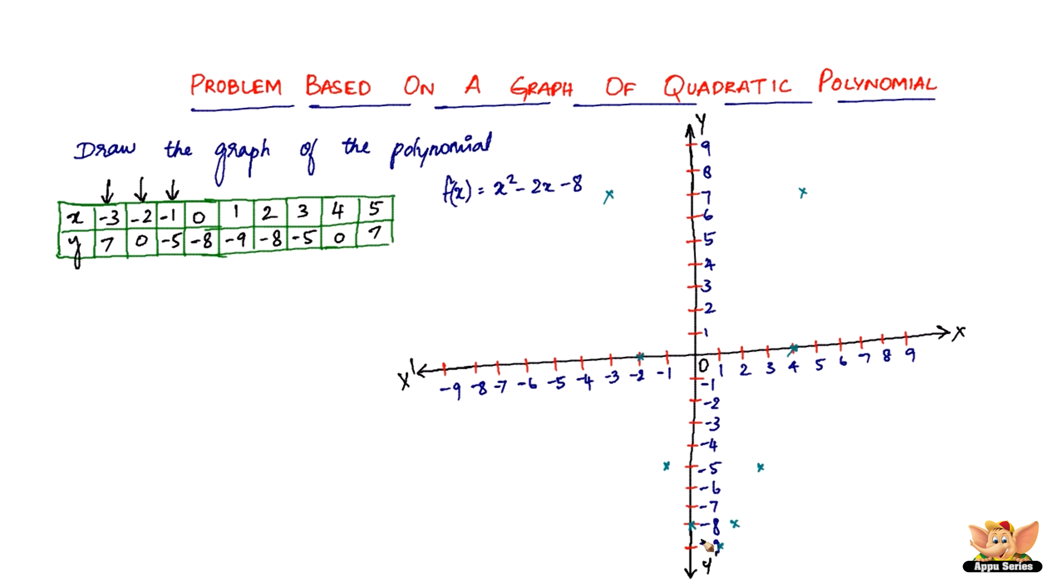So now if we join this, you're going to get almost a u, I guess. So yeah, of course, smoother curves is going to get a smooth u. But this is what it is. This is a graph that you're going to get if you plot it based on a quadratic polynomial. So this is what it is.